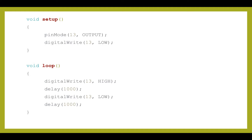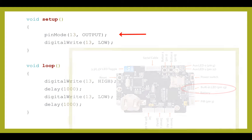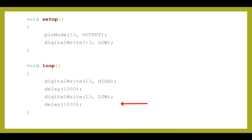Here's the code we'll be typing into the IDE for the Blink program. In the setup function, we first configure digital pin 13 — the pin that controls the built-in LED — to be an output, then use digitalWrite to write a low value to pin 13, setting it to 0 volts and turning the LED off. In the loop function, we write a high value to pin 13 turning the LED on, delay for 1,000 milliseconds or 1 second, then write low to pin 13 turning the LED off, and delay for another second. After the loop function ends, it restarts at the beginning.